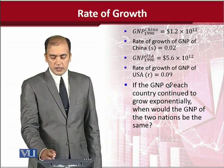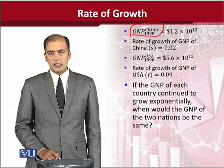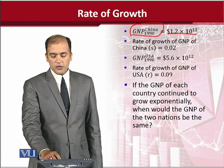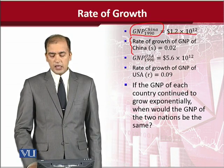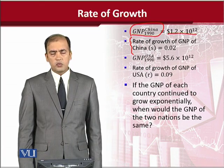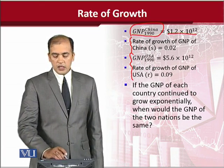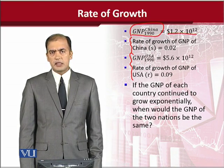As you can see in this case, the GNP of China in 1990 is given, and it is as follows. And now we are also given the growth rate of the GNP of China, and that is 0.02, that is 2%. And the same set of values is given for U.S. at the same point in time.